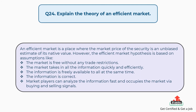Question number 24: Explain the theory of an efficient market. An efficient market is a place where the market price of the security is an unbiased estimate of its intrinsic value. The efficient market hypothesis is based on assumptions like: firstly, the market is free without any trade restrictions; secondly, the market takes in all the information quickly and efficiently; thirdly, the information is freely available to all at the same time; next, the information is correct; and lastly, market players can analyze the information fast and act on the market via buying and selling signals.